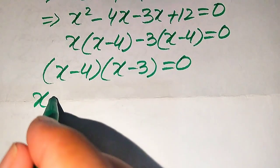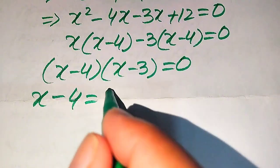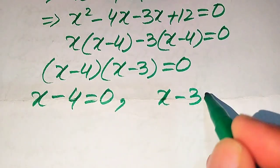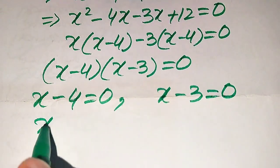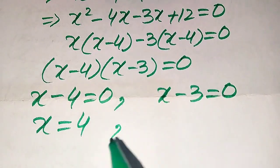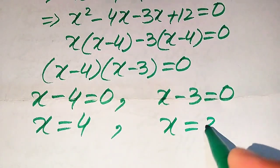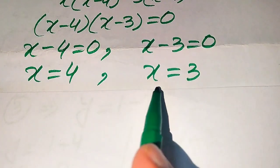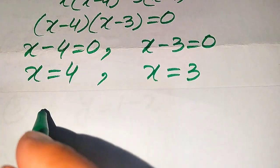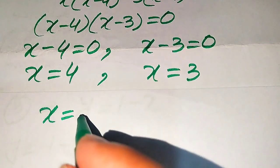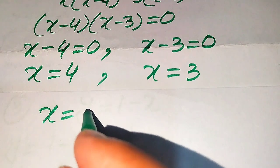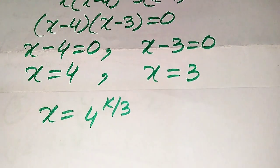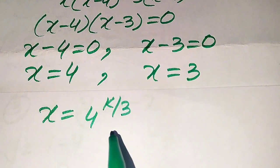This splits into two sub-cases: x − 4 = 0, giving x = 4, and x − 3 = 0, giving x = 3. Recalling that x = 4^(k/3), we now back-substitute both values. When x = 4: 4^(k/3) = 4, which gives k/3 = 1, so k = 3. When x = 3: 4^(k/3) = 3, our target is to find the integer value of k.